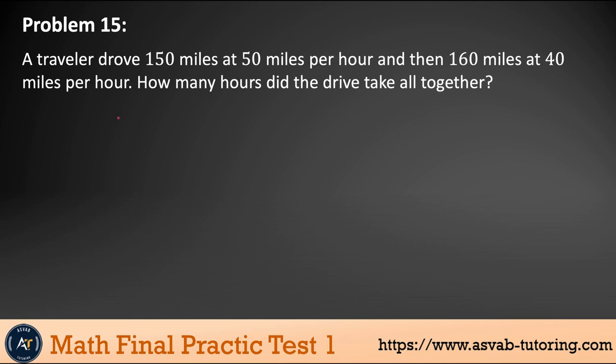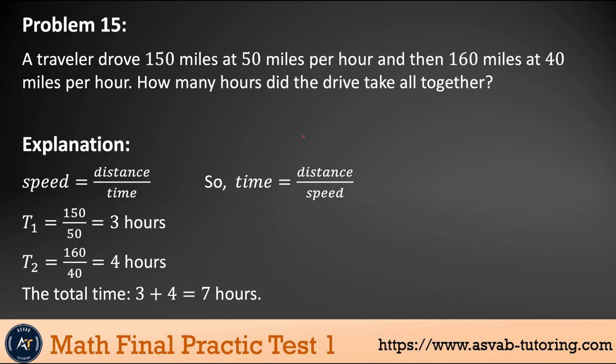Next problem. A traveler drove 150 miles at 50 miles per hour. And then 160 miles at 40 miles per hour. How many hours did the driver take altogether? Right? So this problem, a lot of times you see in the actual test. So let's solve that. So the first, what you have to do, how long it take, 150 miles. If you drove at a 50 mile an hour. So the T1 is 150 divided by a 50, that gives you three hours. And then T2 will be 160 divided by 40 gives you four hours. So this is the formula to find the speed distance over time or time equal to distance over speed. So if you add them up, so that gives you seven hours.